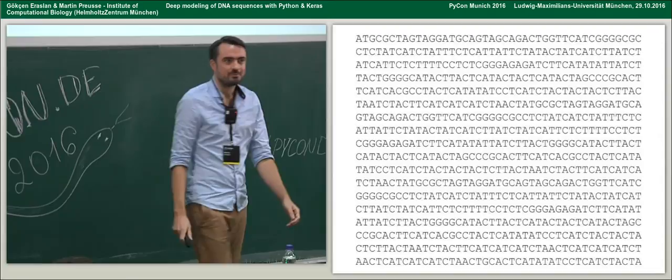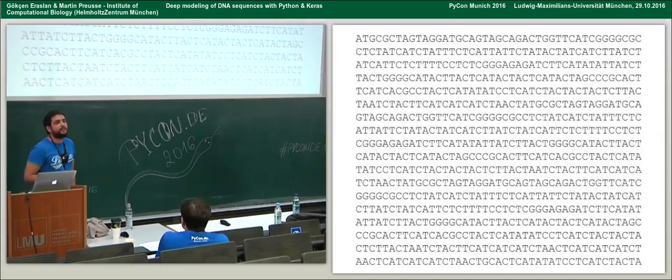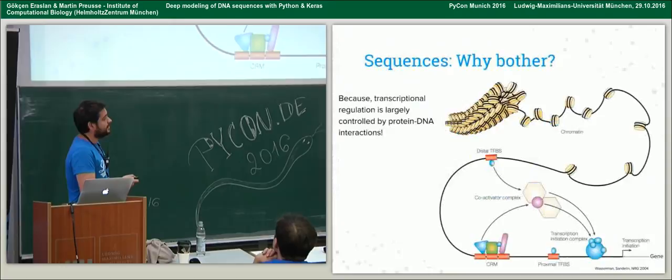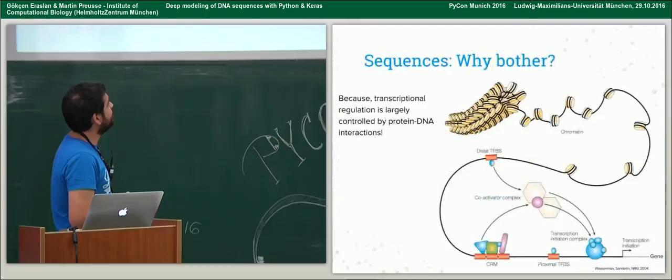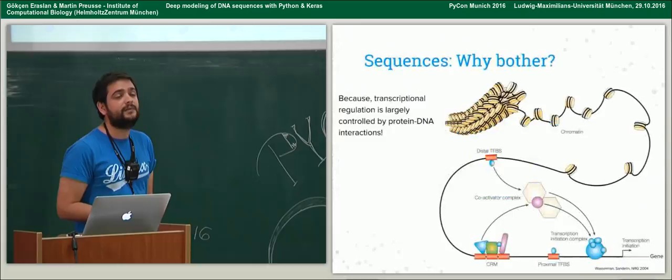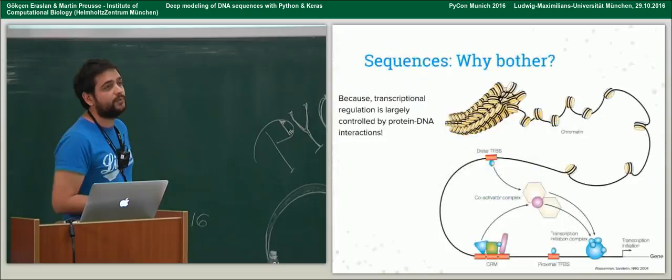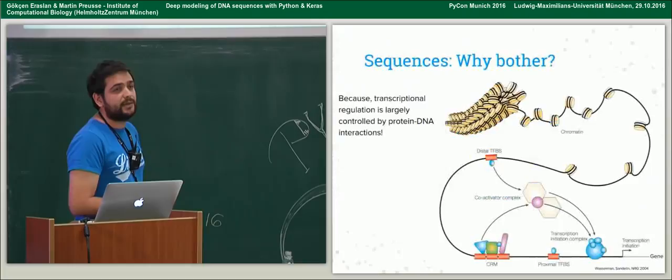I'd like to start with the story of sequence prediction in computational biology. As Martin nicely explained, it's all about the interactions between key components in the cell — proteins and DNA. These interactions are crucial for preserving the identity and functioning of the cell. The patterns that proteins recognize on DNA are also crucial. We aim to discover these patterns and train classifiers on these sequences. This is the whole idea of sequence classification.